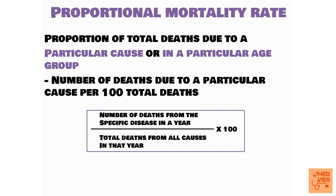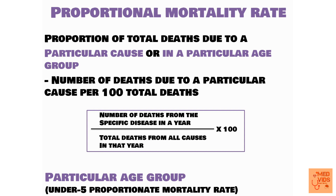If you want to know the proportional mortality rate in a particular age group — for example, under-5 proportionate mortality rate — replace the disease in the formula with the age group. The formula becomes: number of deaths in the under-5 age group divided by total deaths in that year, multiplied by 100. Proportionate mortality ratio tells us what proportion of a population is dying due to a specific disease, or what proportion of deaths falls in a specific age group.